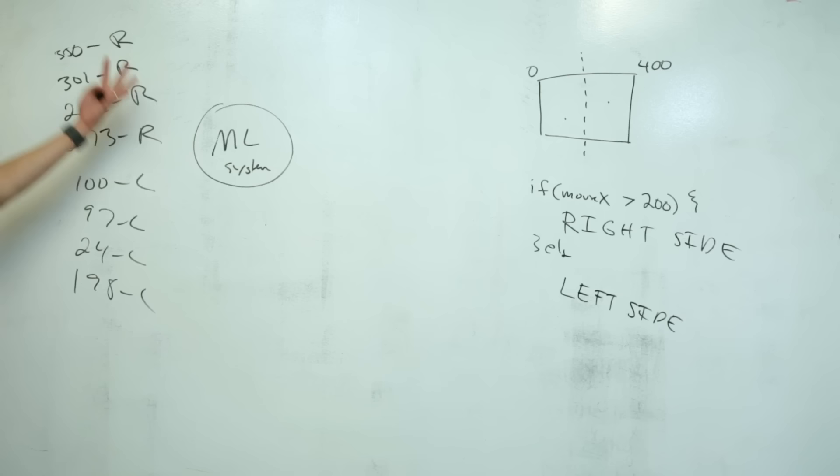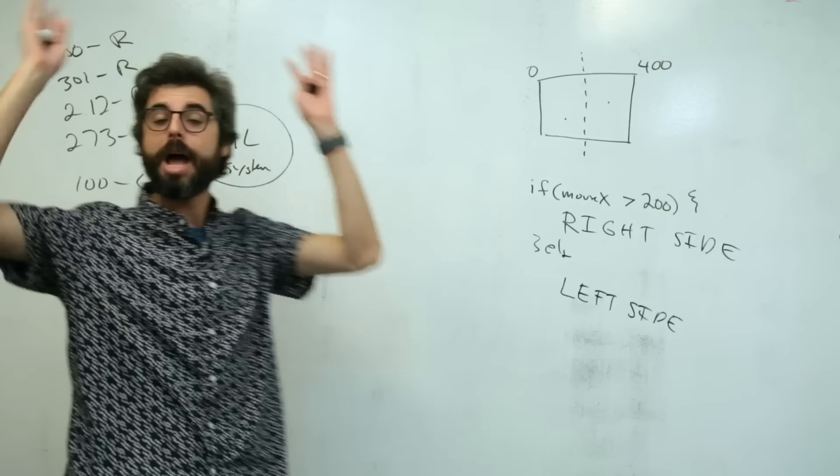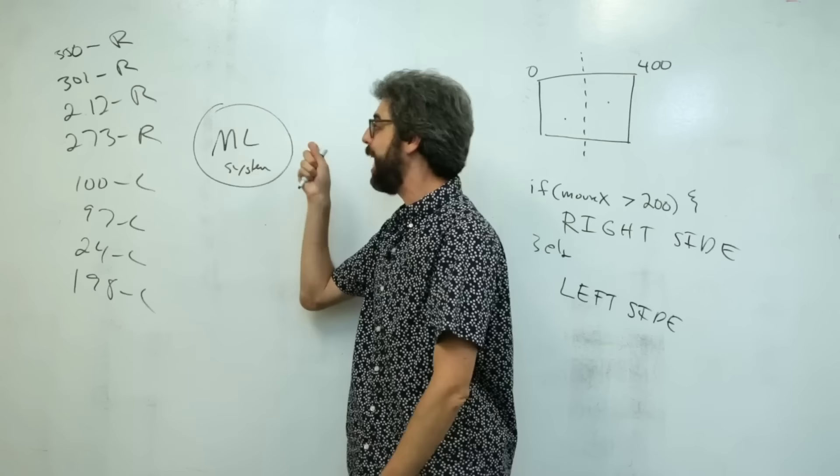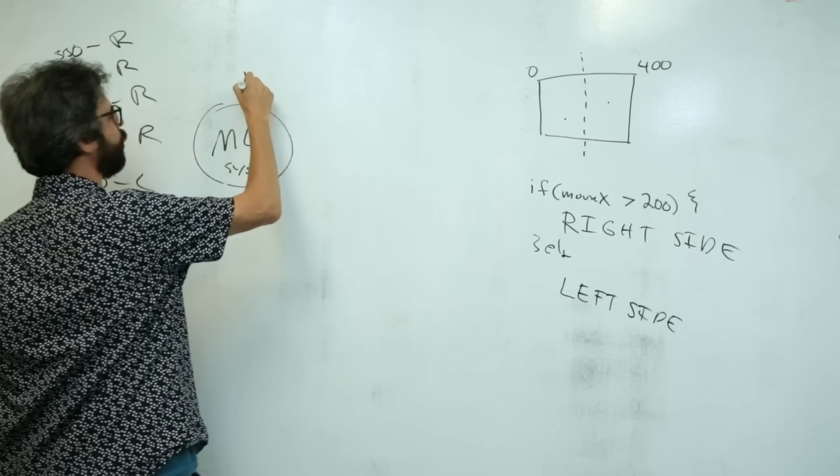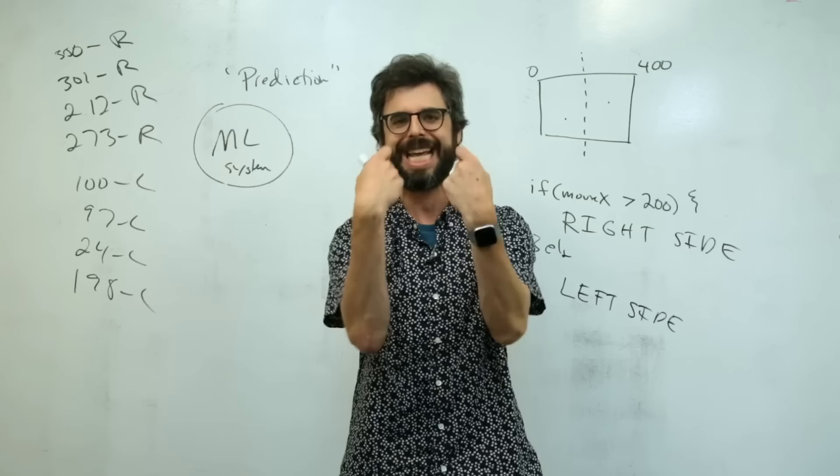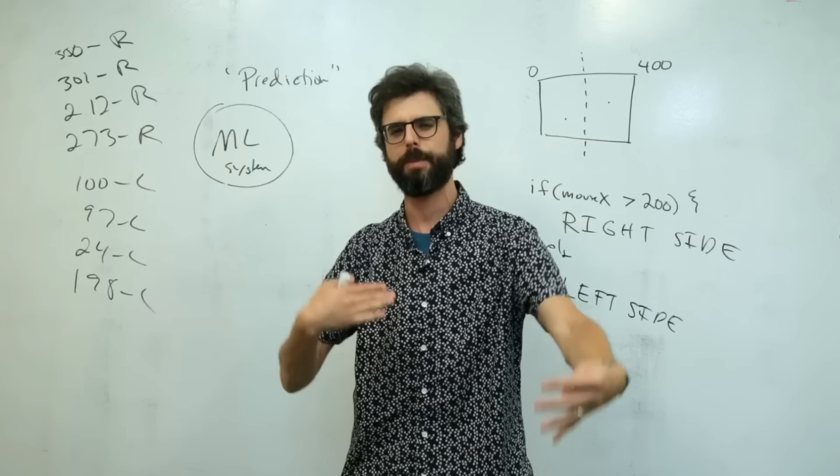Well, machine learning is about teaching a system to understand data without explicitly writing your own algorithm. This might be the most trivial, simplistic algorithm ever, but the way I would do machine learning is I would say, hey, machine learning system, I'm going to give you lots of information, like 350 is on the right side, and 301 is on the right side, and 212 is on the right side, and 273 is on the right side, and 100 is on the left side.